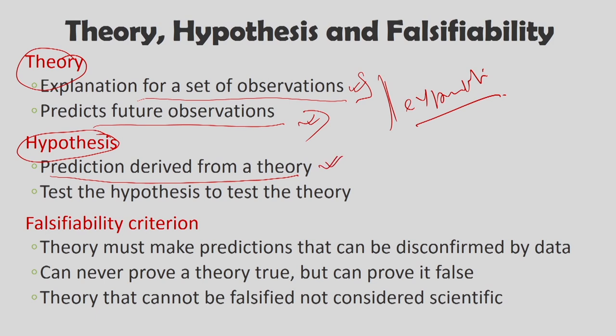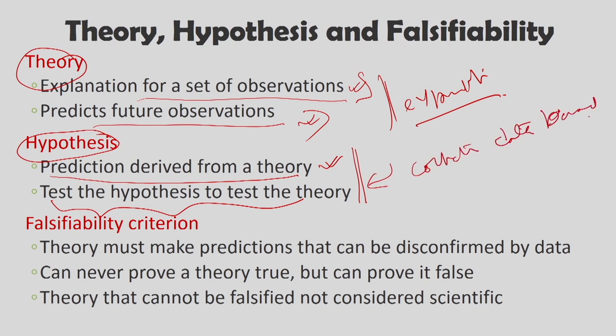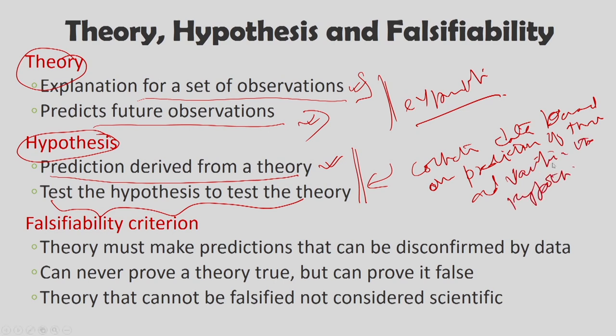Once a hypothesis is laid, the researcher collects data based on the prediction of the theory and then tests the hypothesis to test the theory. If the hypothesis is supported by the data, we say that the theory is correct; otherwise, we want to reform or reformulate the theory. We collect data in response to what the theory predicts, test it, and verify the hypothesis.